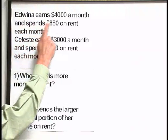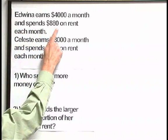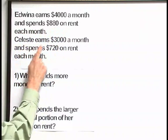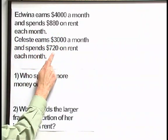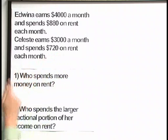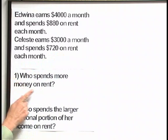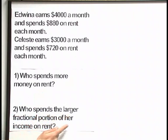Edwina earns $4,000 a month and spends $880 on rent each month. Celeste earns $3,000 a month and spends $720 on rent each month. We're going to answer two questions: number one, who spends more money on rent, and number two, who spends the larger fractional portion of her income on rent?